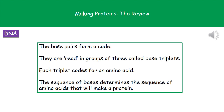What those bases actually do is form this code. When that code is being read, it's not just each individual base that's read, but they're read as a group of three called a triplet. Each of those three bases together — that triplet — will code for one amino acid.